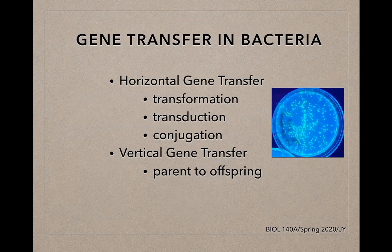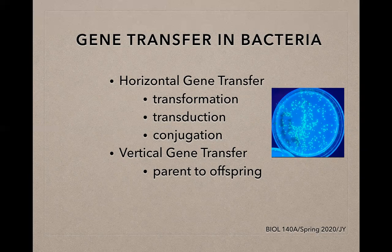Bacterial transformation is one of three types of horizontal gene transfer in bacteria. Gene transfer in bacteria typically involves the transfer of genetic material from one bacterial cell to another, achieved through various processes. In horizontal gene transfer we have transformation, transduction, and conjugation. Transformation involves bacterial cells taking up DNA from their environment, for example through the utilization of a plasmid. Transduction involves a phage — essentially a bacterial virus — that moves genes from one cell to another. Conjugation involves the direct transfer of genes from one bacterial cell to another through a pilus. Vertical gene transfer, on the other hand, is the mechanism in which genetic material is transferred from parent to offspring.